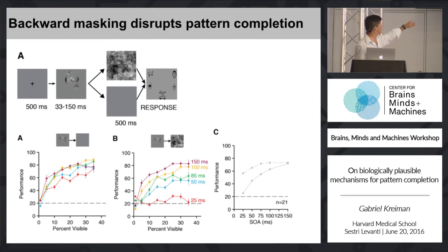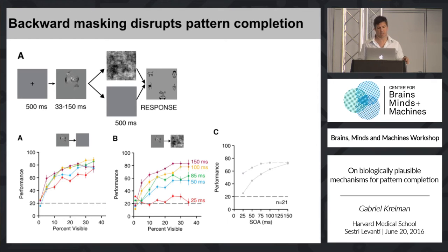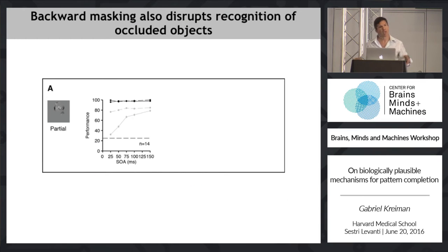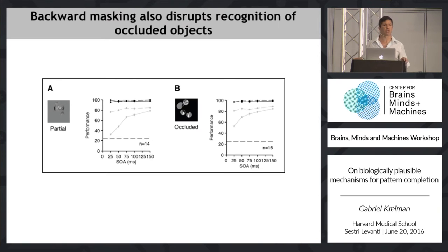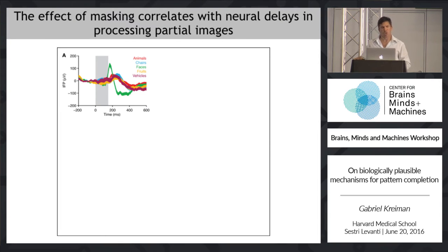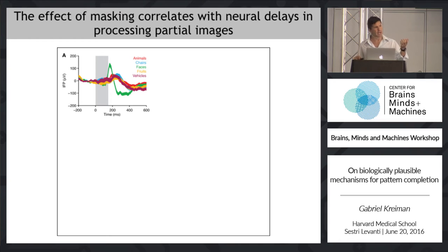Here's the summary of behavioral performance as a function of SOA. In the case of no masking, this is the top line. In the case where there is backward masking, you can see how it significantly disrupts behavioral performance. All of this is done with the bubbles experiment, and the same results hold if you use real occluders.